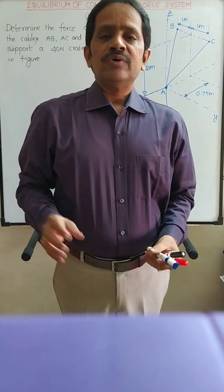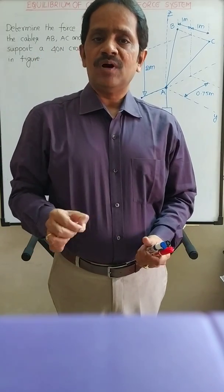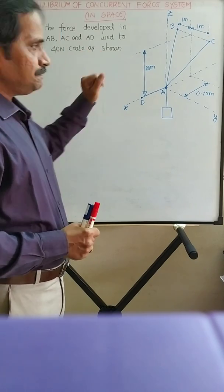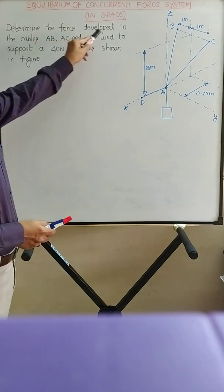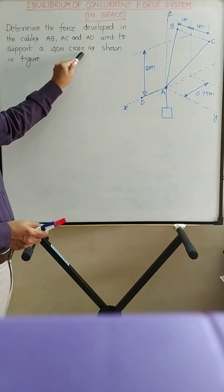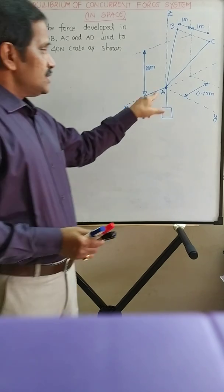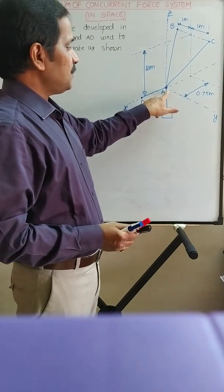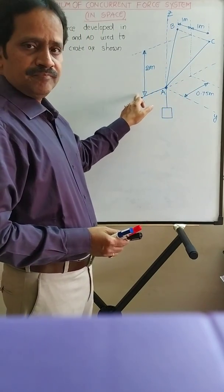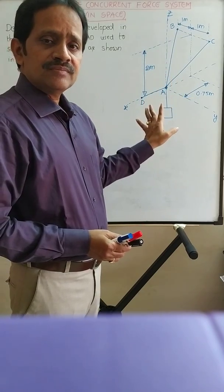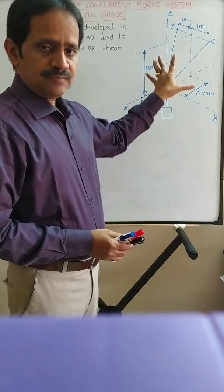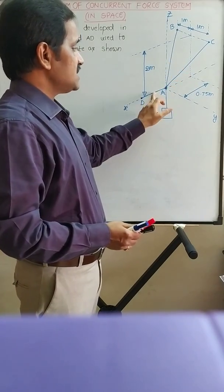In this video, we are going to see an example on equilibrium of concurrent forces system in space. First, determine the force developed in the cables AB, AC, and AD used to support a 40N crate as shown in the figure. This crate, whose weight is 40N, is supported by three cables: AB, AC, and AD. You have to find out the force in each of these three cables.